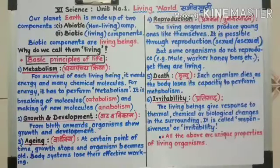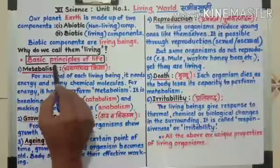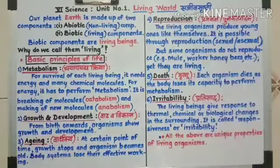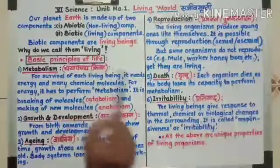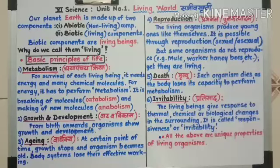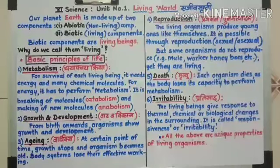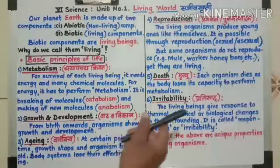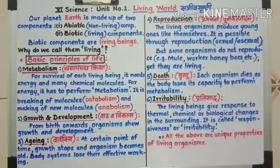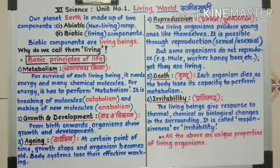The fifth basic principle of life is death — Murtyu. Each organism dies as the body loses its capacity to perform metabolism — Chaya Pachai Prakriya. When a living organism's body loses the capacity for metabolism, the organism dies. Death does not apply to non-living things; it is a special characteristic of living beings.